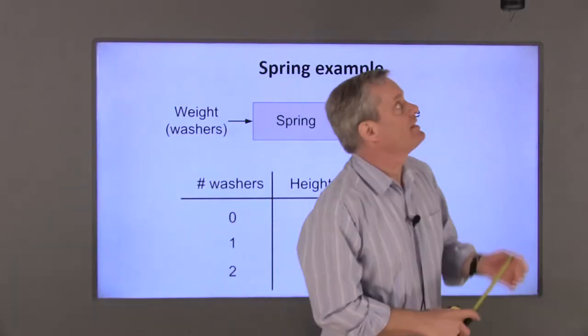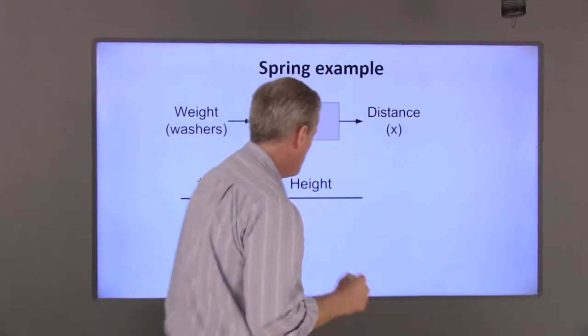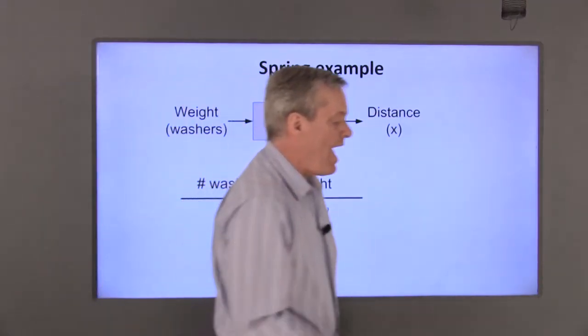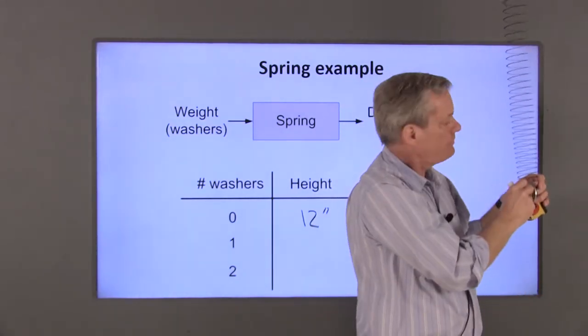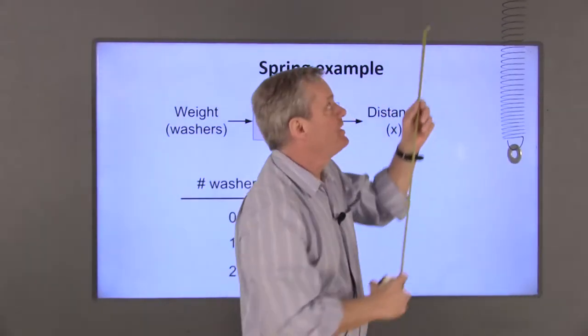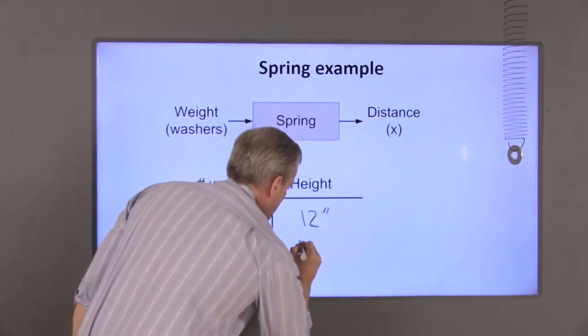With no washers attached to the spring, the bottom of the spring is about 12 inches from the ceiling. If I add a washer to this and remeasure the distance, my distance is about 23 inches.